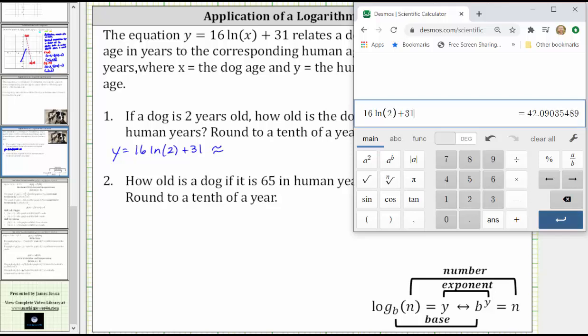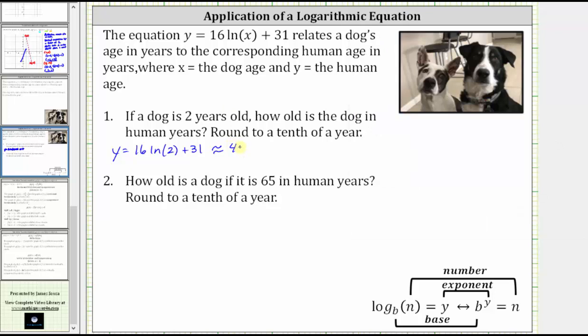Rounding to the tenths place value, one decimal place, we round up because of the nine in the hundredths place value. We have approximately 42.1. We now know a two-year-old dog is approximately 42.1 years old in human years.